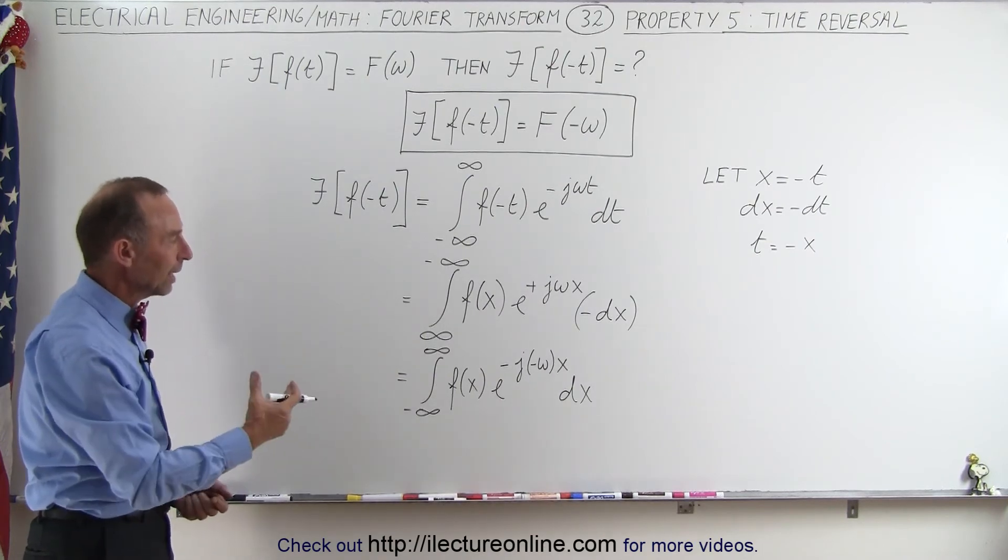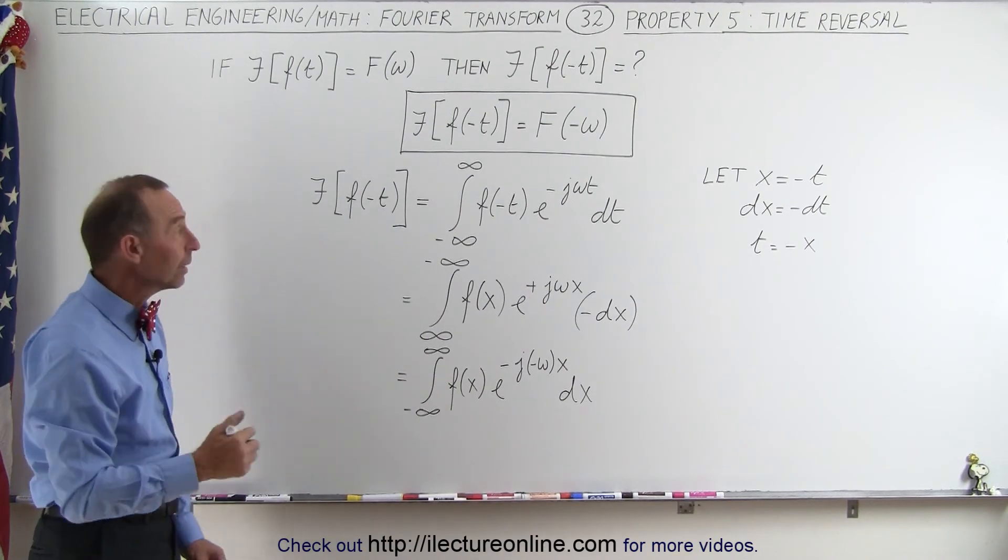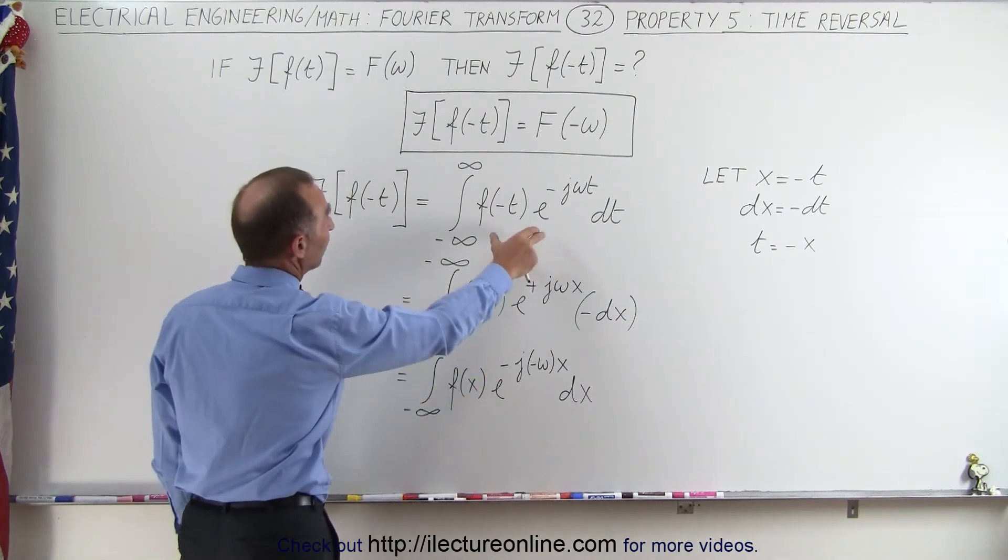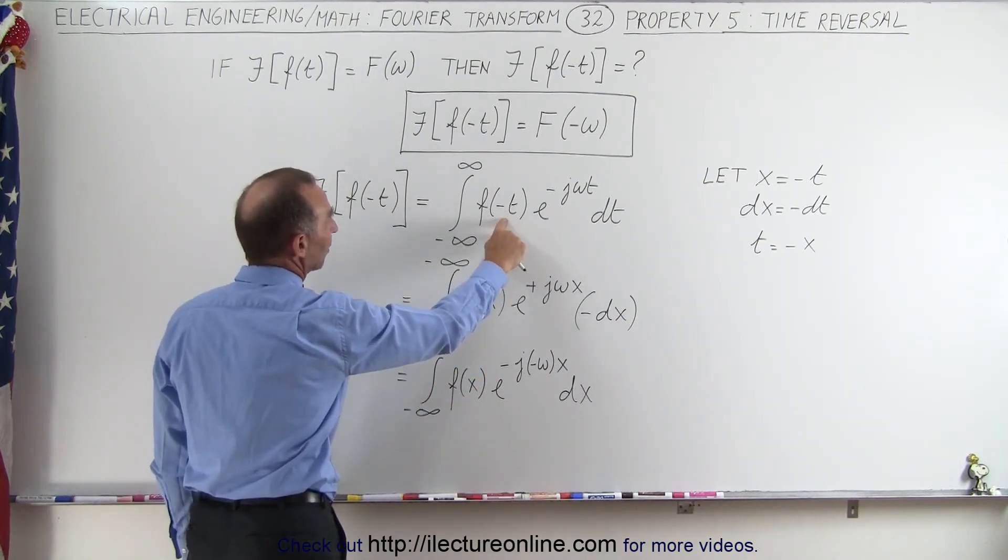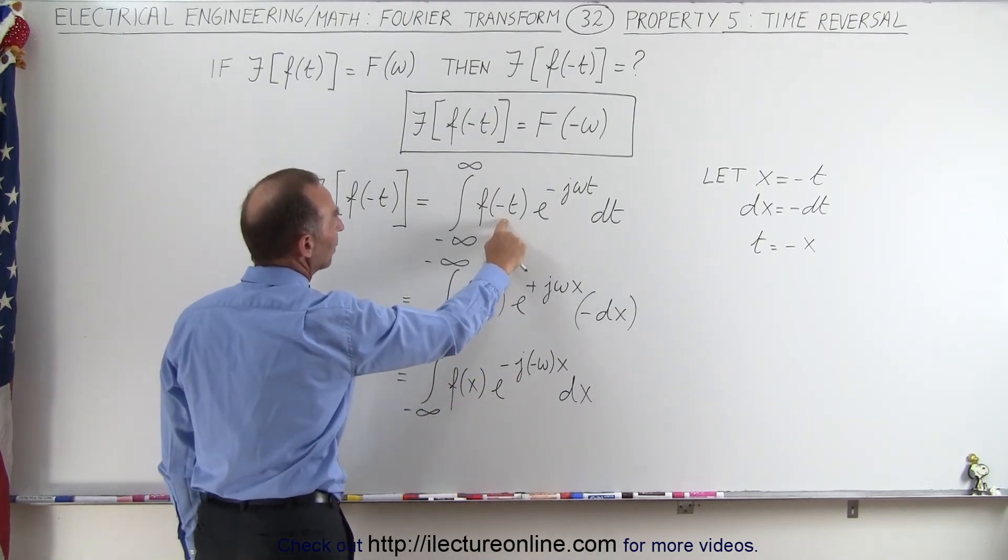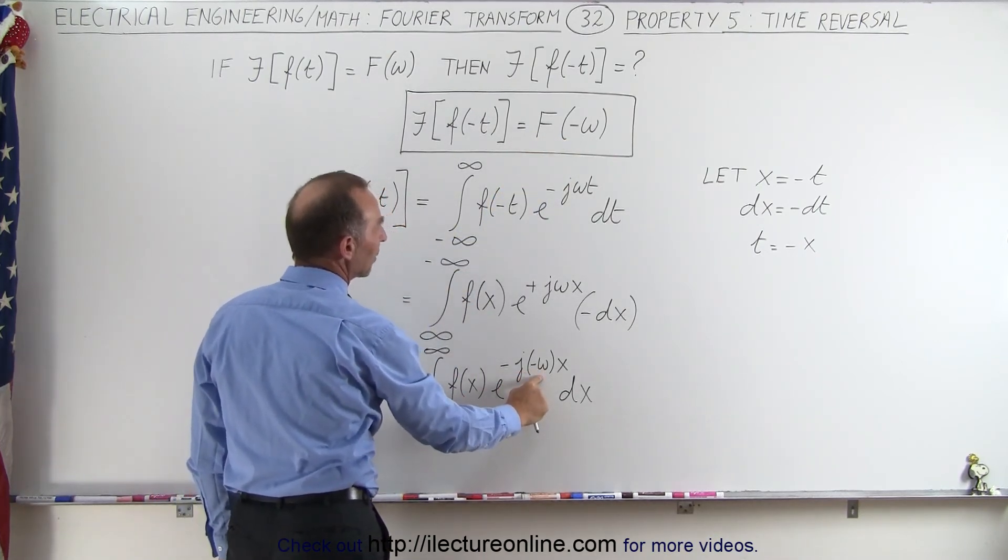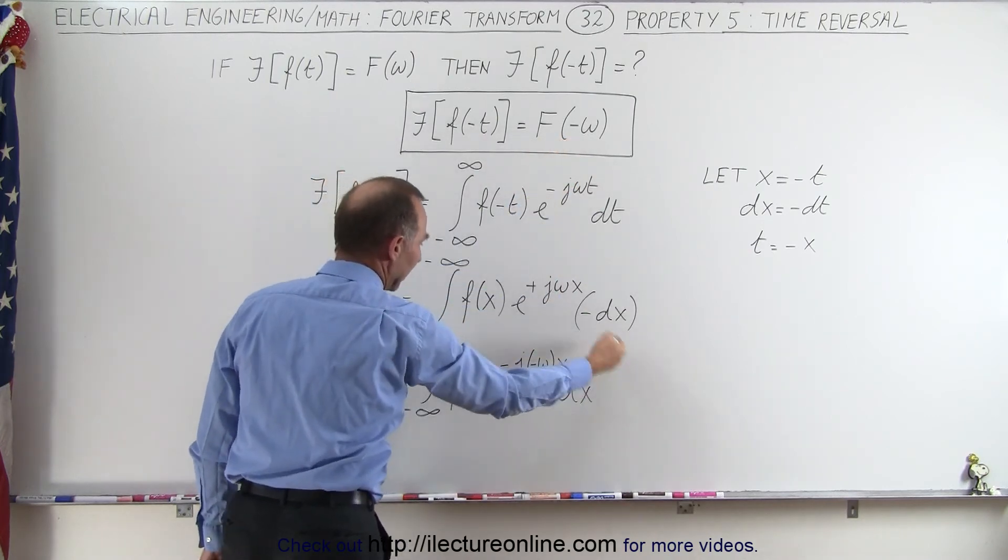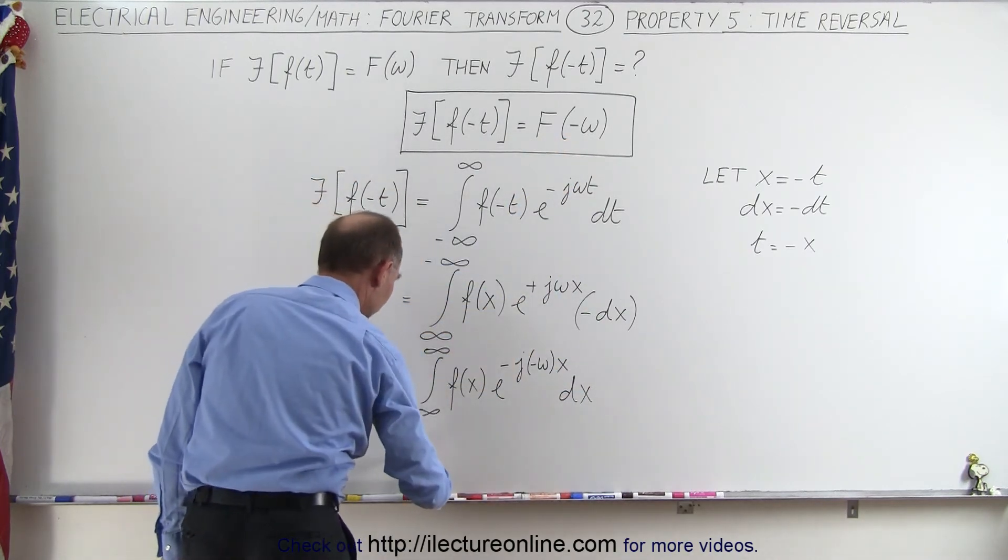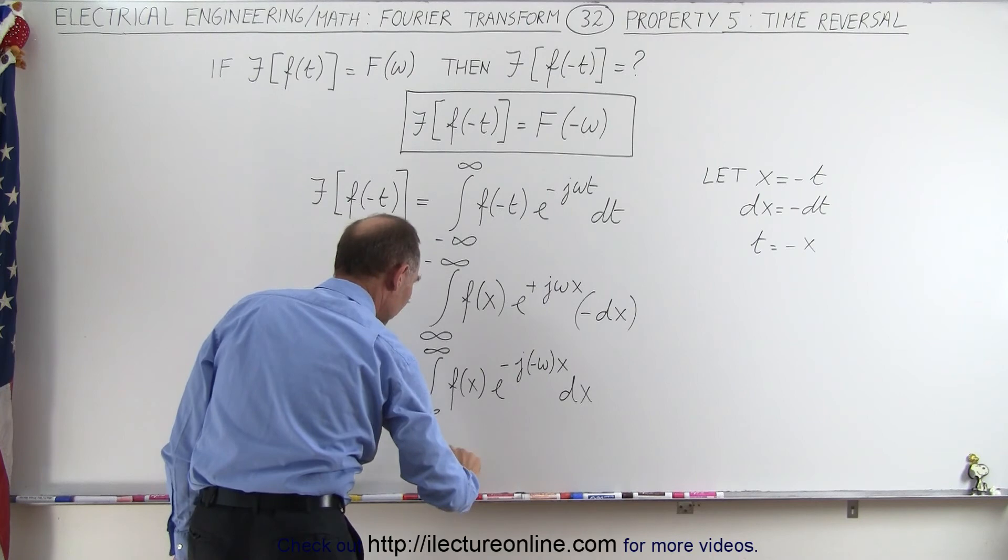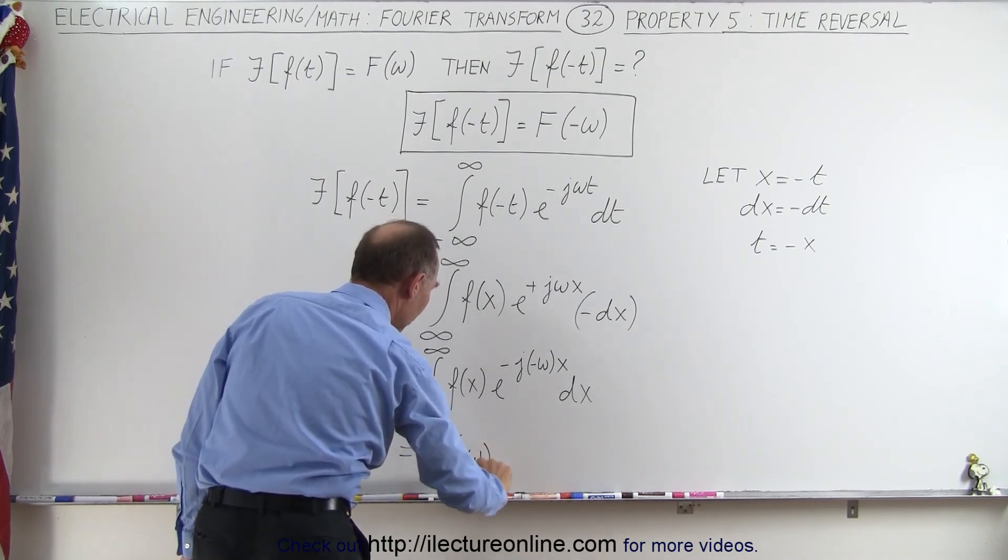And now we're ready to integrate. So now when we integrate, notice if we have the same format as before, except if this was a positive t, then we'll end up with f of omega. But since we have a minus omega here, this will then become f of minus omega, everything else being the same. So this becomes equal to the Fourier transform of minus omega.